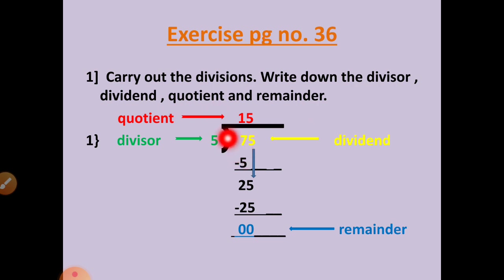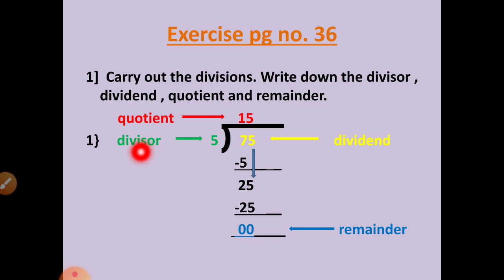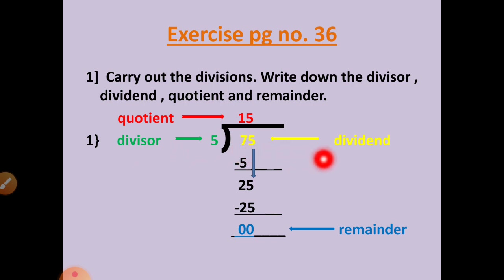Question number 1: 75 is divided by 5. This 5 is called the divisor. And this number 75, the bigger number which we will divide, is called the dividend.